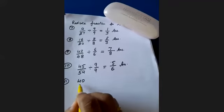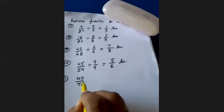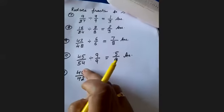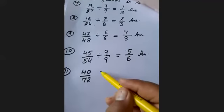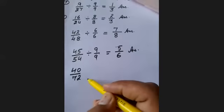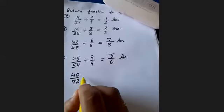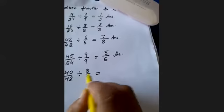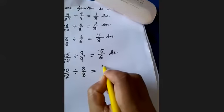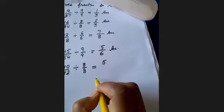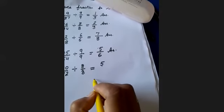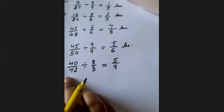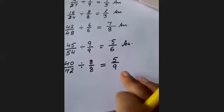Question 11: 40 upon 72. Both 40 and 72 are multiples of 8. So we will divide by 8. 40 divided by 8 is 5, and 8 times 9 is 72, so 72 divided by 8 is 9. Your answer is 5 upon 9.